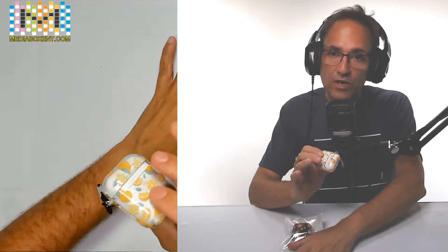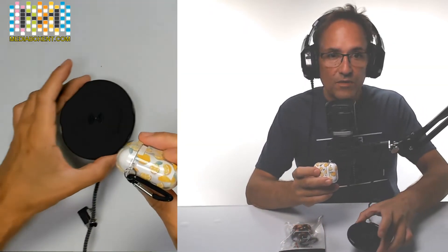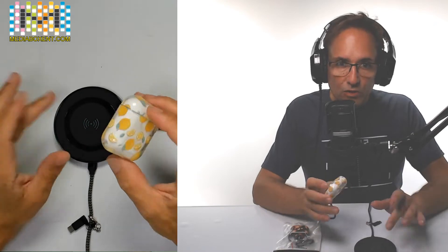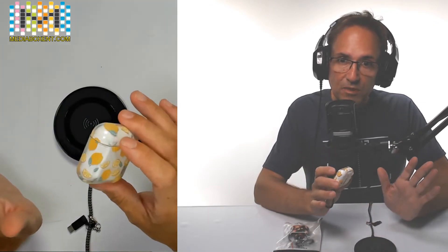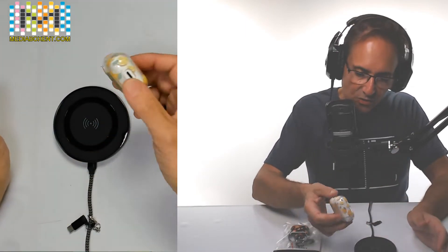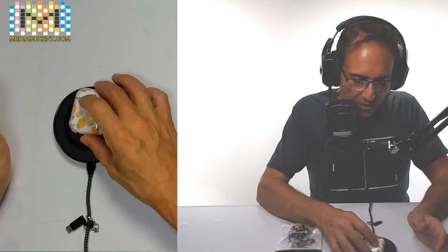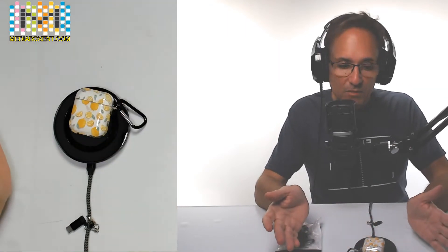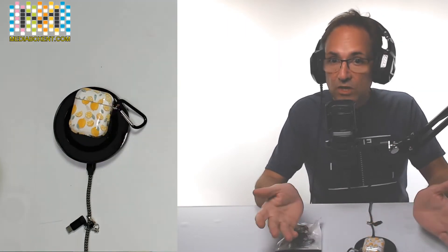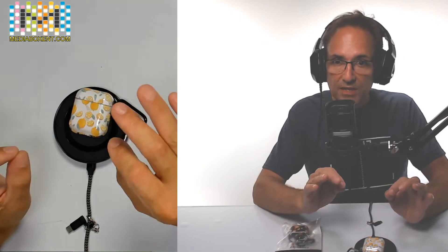One good thing - if you need to charge this wirelessly, we have the wireless device here. So now we're going to try the charger. Like I said before, you don't need to remove it out of the case. You just put it right in the charger and it will automatically charge. That's one plus - you don't need to remove it from the case.